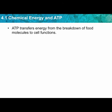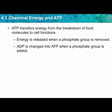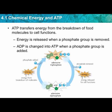ATP transfers energy from the breakdown of food molecules — these sugar and starch molecules — to cell functions. Energy is released when a phosphate group is removed, going from adenosine triphosphate to adenosine diphosphate, ADP. ADP is converted back into ATP when a phosphate group is added, which happens in photosynthesis and other steps as well.